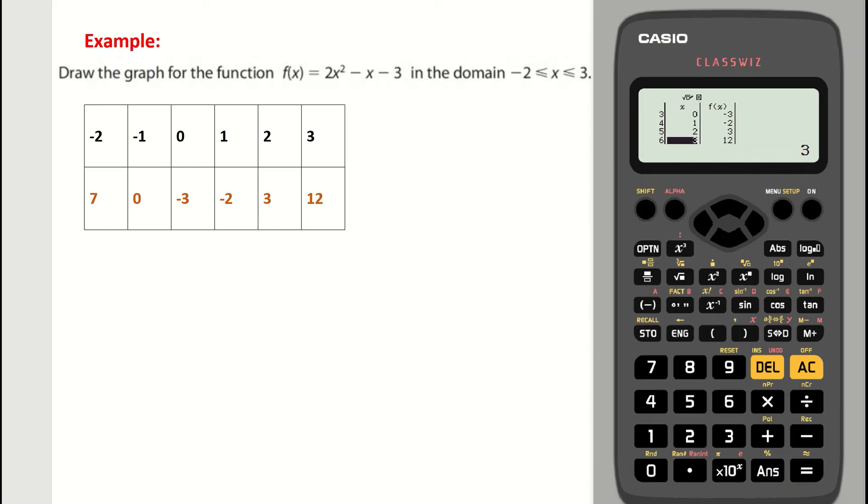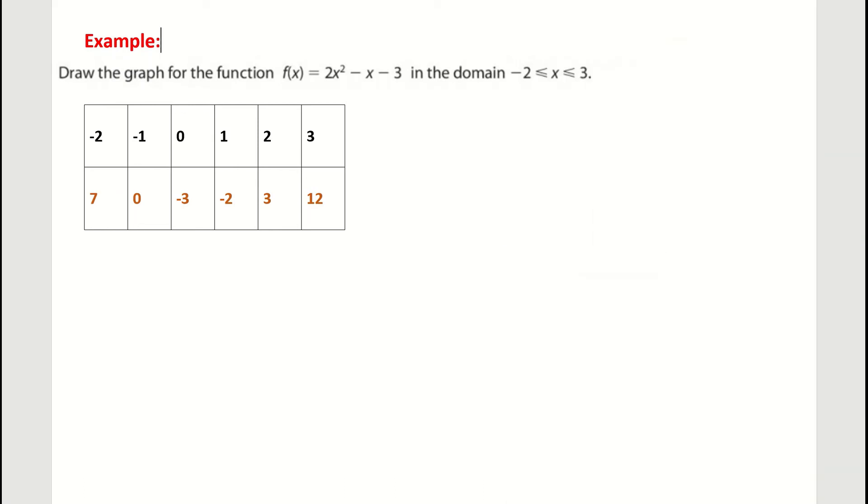So I'm going to put away my calculator now and from my table I'm going to write down my coordinates, my points or my couples. So my points are (-2, 7). My second point is (-1, 0). My third point is (0, -3). My next point is (1, -2), (2, 3) and (3, 12).